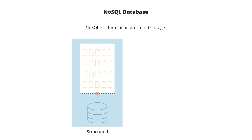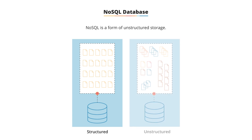As you see on the left, a structured database is very heavily dependent on rows, columns, and tables. The unstructured database has a wide variety of different types of data.